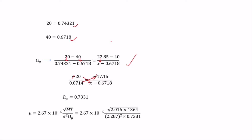Now we substitute all values into the Chapman-Enskog formula: the molar weight, temperature of 1364 K, characteristic diameter sigma, and collision integral Ω = 0.7331. When you do the calculation correctly, you get the viscosity of hydrogen gas as 2.38 times 10 to the negative 4 Poise.